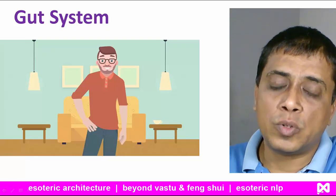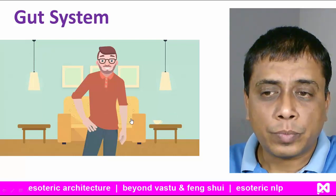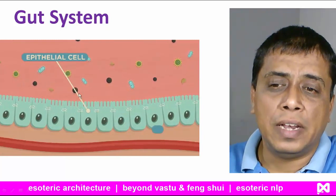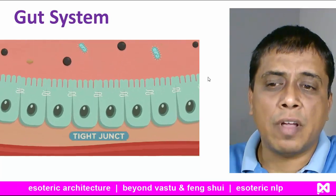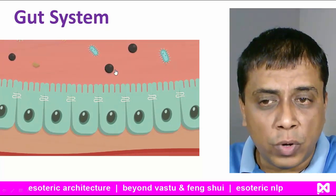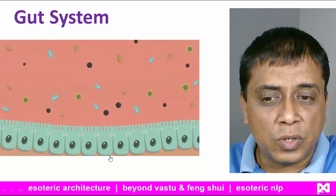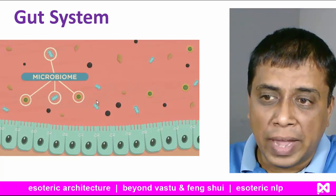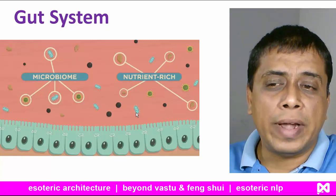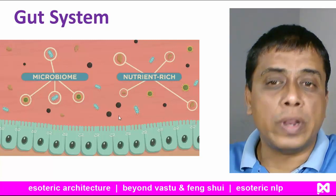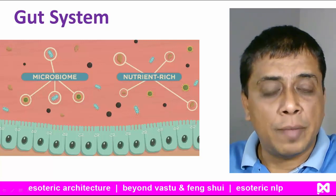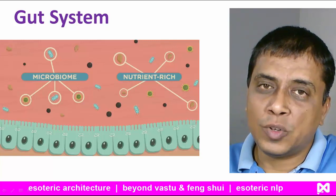Let me give you some details so you can understand well. There is an intestine, and in the intestine there is an epithelial cell which forms a border between blood vessels and the environment. This epithelial cell has a very tight border, so food toxins, undigested food, and waste food cannot enter the blood vessels. It is a very protective layer. This microbiome is very useful for us, providing a very helpful and nutrition-rich environment, protecting our blood vessels so that only nutrients can pass through — nothing else.